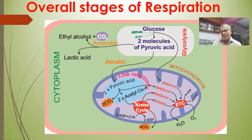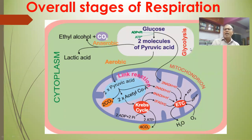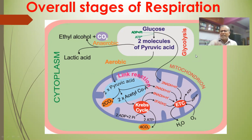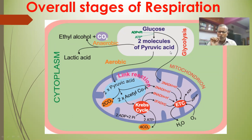Glycolysis is a universal process occurring in both aerobic and anaerobic organisms. It is common to aerobes and anaerobes. Glycolysis is the conversion of one molecule of glucose into two molecules of pyruvic acid.